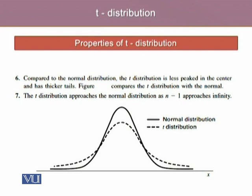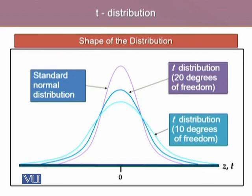Compared to the normal distribution, the T-distribution is less peaked in the center and has thicker tails. The figure compares the T-distribution with normal distribution. Moreover, the T-distribution approaches the normal distribution as n minus 1 approaches infinity. We can further look at it, that here, the purple peak is represented by standard normal distribution.